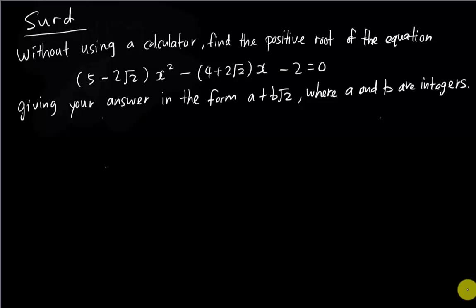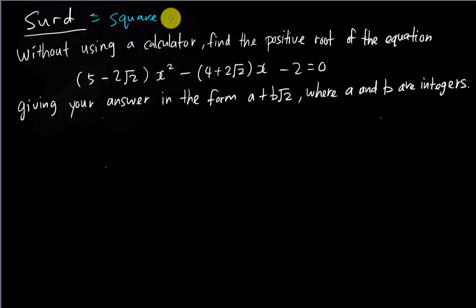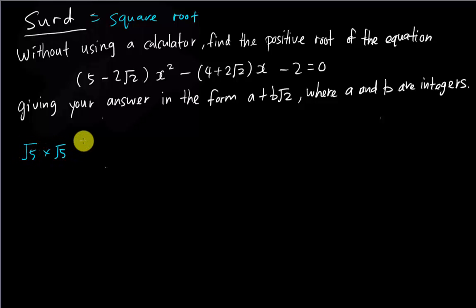In this video I'm going to teach about surds. The meaning of surds is actually the same as square roots. In IGCSE math they call it surds. For example, if you have √5 multiplied by √5, you get √5 squared, and square root and square will simplify to give you 5.